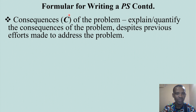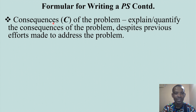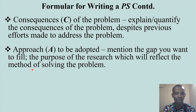Two more points are raised in this lesson. The next is the consequences of the problem — denoted with capital letter C — addressing who this problem affects: an individual, group, or society. These consequences may be present or anticipated. The last element is the approach to be adopted — denoted with capital letter A — where you mention the gap the researcher intends to fill, the purpose or goal of the research, and the method for solving the problem.